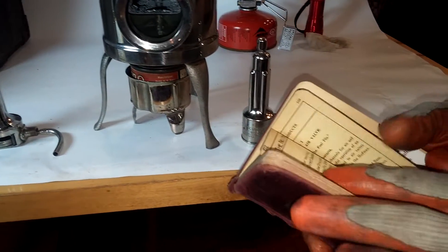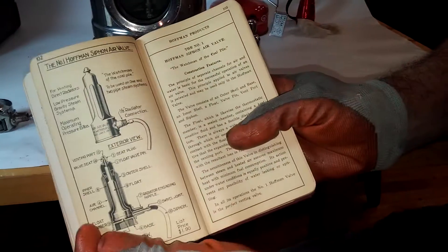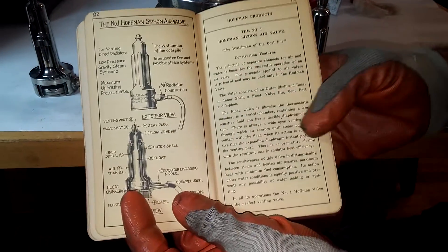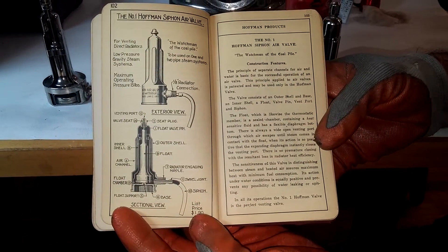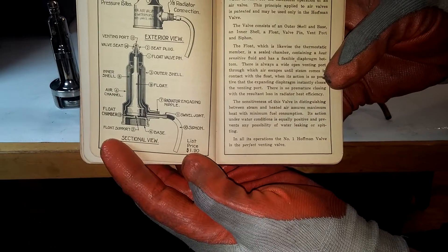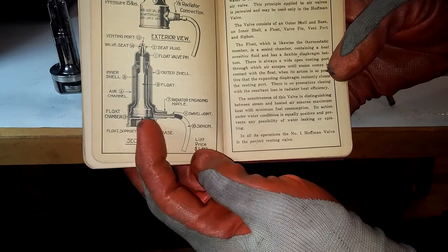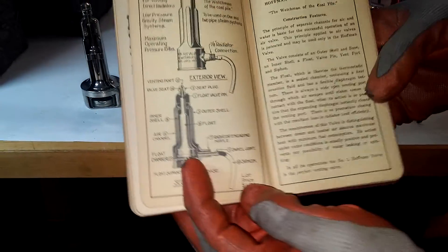The data we have shows that the number one valve in 1925, which this is the Hoffman book, with the list price was $1.90 each, again showing the cutaway of the valve.